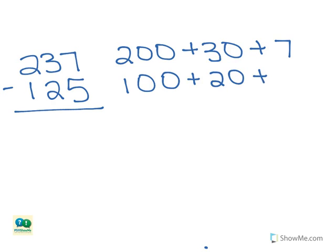And the 5 is in the ones place, so its value is five ones, or five. We expanded 125 into 100 plus 20 plus 5.